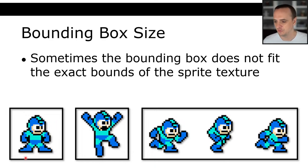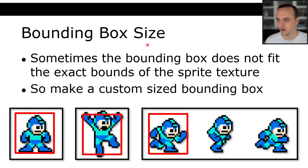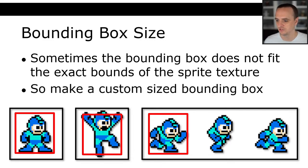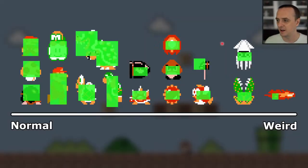If we took the bounding box for Mega Man to be the entire image size, then Mega Man would essentially be hovering over the ground in some frames of animation, and that wouldn't look very good. So oftentimes we're going to make a custom-sized bounding box that is not the exact same size or shape as the original image. In assignment three we're going to be using a specific bounding box size even though it doesn't exactly fit the image size, and it turns out this is how a lot of video games work.